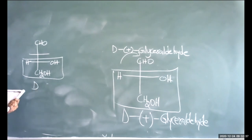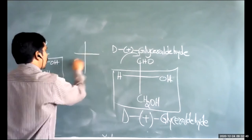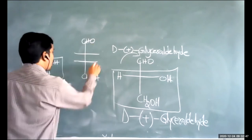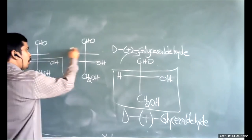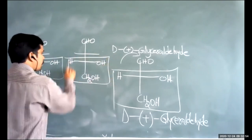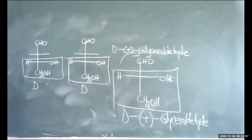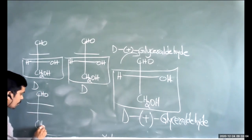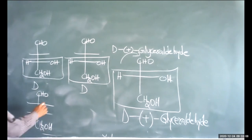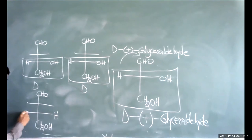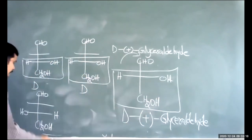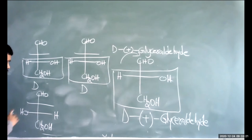For the four given structures: first compound — CHO at top, CH2OH at bottom, OH on right, H on left — this is D configuration. Second compound — CHO at top, CH2OH at bottom, OH on right, H on left — this is also D configuration. Third compound — CHO at top, CH2OH at bottom, H on left side higher but OH on left at bottom carbon — this is L configuration.